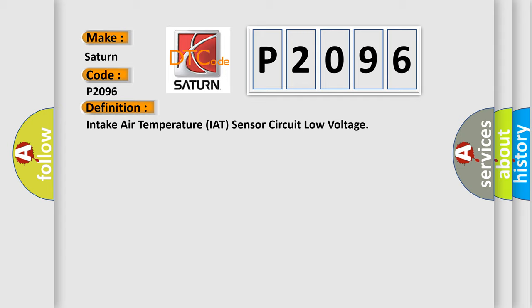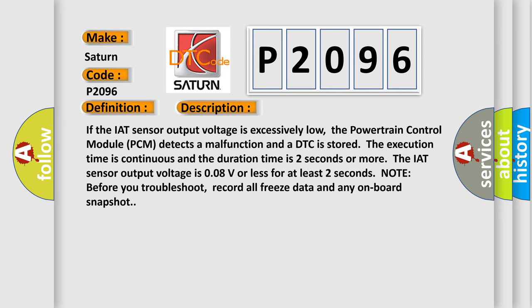And now this is a short description of this DTC code. If the IAT sensor output voltage is excessively low, the powertrain control module (PCM) detects a malfunction and a DTC is stored. The execution time is continuous and the duration time is two seconds or more. The IAT sensor output voltage is 0.08V or less for at least two seconds.